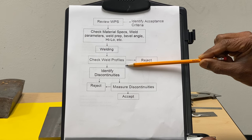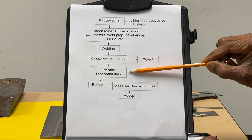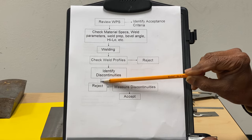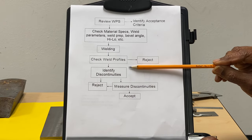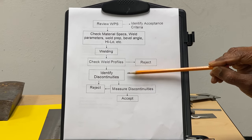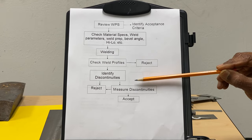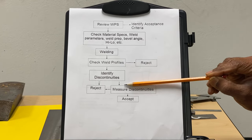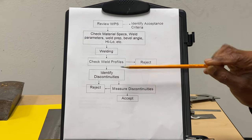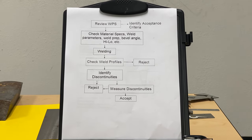Then we look for discontinuities. Discontinuities could be ones which are automatic rejects, such as cracks — automatic reject right there. There will be other discontinuities which require measurements; for example, undercut, where you use gauges to take those measurements, and porosity. After that, you apply the code to see if they are acceptable or rejectable. This gives you a summary of the flowchart for inspection.